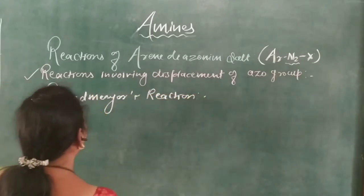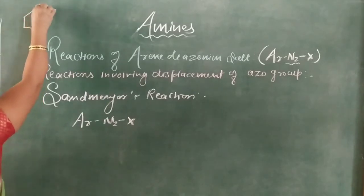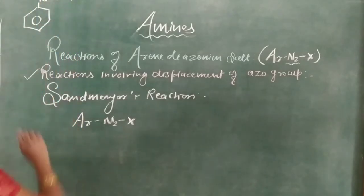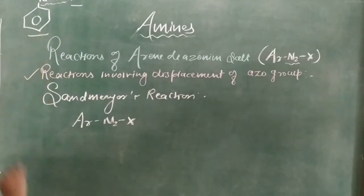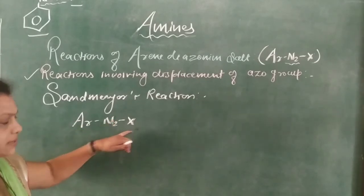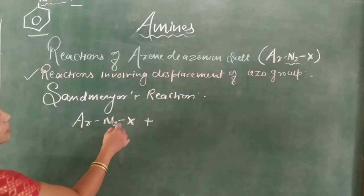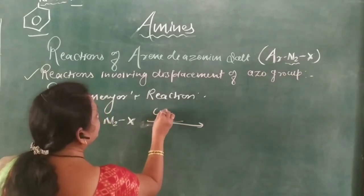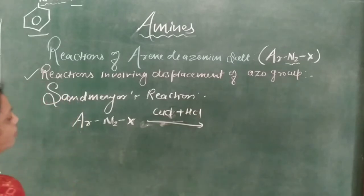In the Sandmeyer reaction, aryl diazonium halide Ar-N2-X has the structure where Ar is connected to N triple bond N positive and X negative. This N2 is the diazonium and X is the halide, so it is symbolically written as Ar-N2-X.